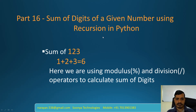Here, if we provide input as 1, 2, 3, we need to add the sum of digits like 1 plus 2 plus 3 equal to 6. If we want to add individual digits, then first we need to get individual digits from the input number. Here we are using modulus and division operators to calculate the sum of digits.